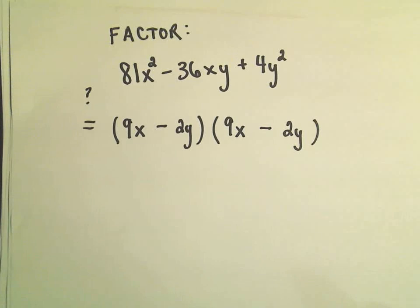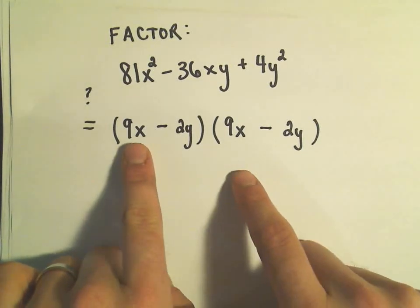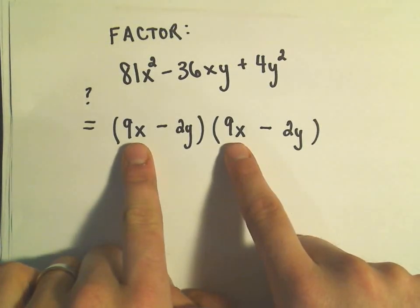Is that right? Well, if you multiply it out, 9x and 9x is 81x², which works.